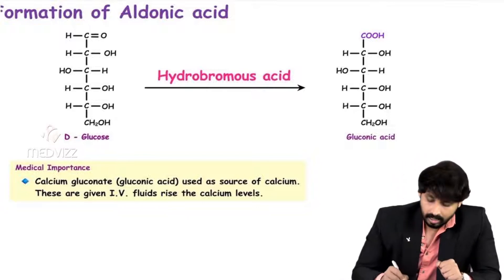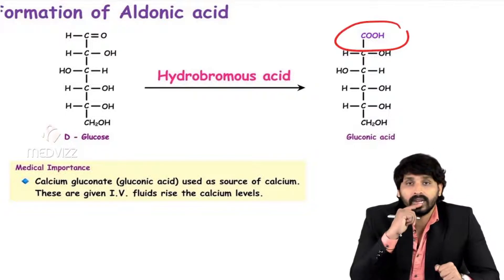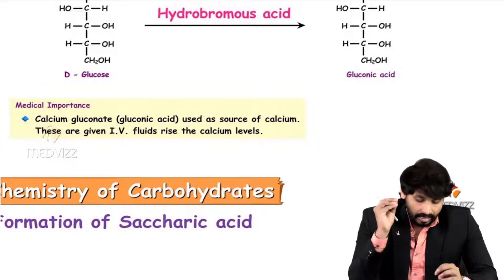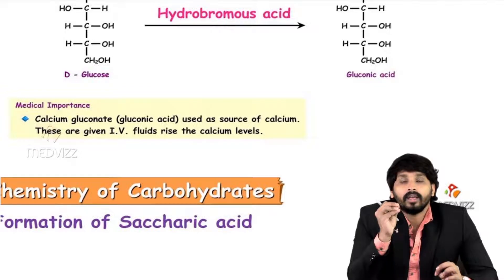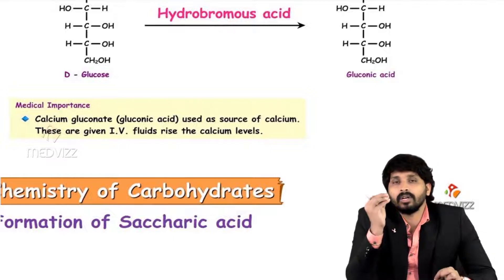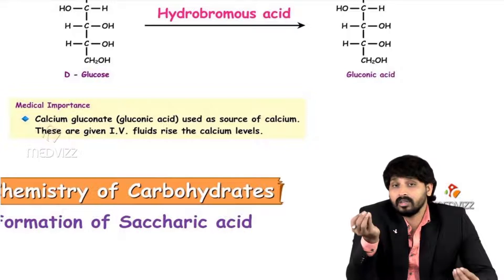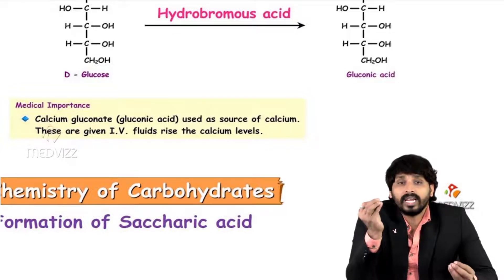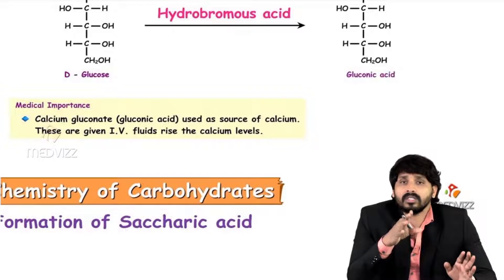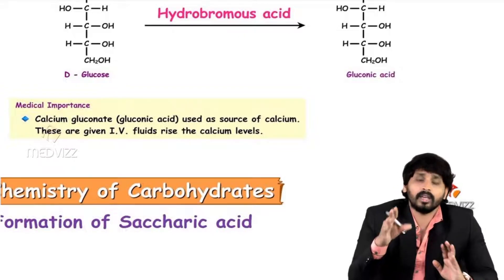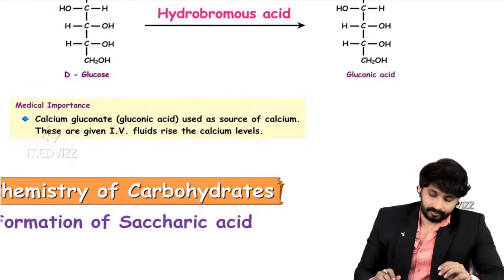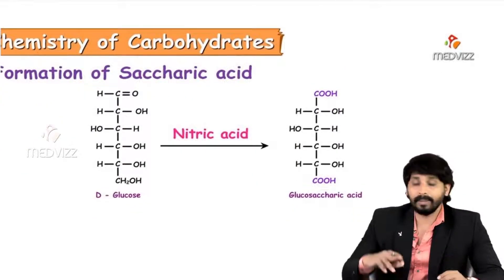When glucose is treated with hypobromous acid, oxidation occurs at the first carbon, forming a COOH group — this is known as gluconic acid. The medical importance: calcium gluconate is an injection that serves as a source of calcium. If a patient has low calcium levels, we give calcium gluconate, since calcium cannot be given directly — it must be combined with a carbohydrate to be transported in circulation. It is given via IV to maintain calcium levels.